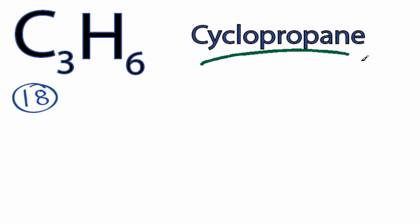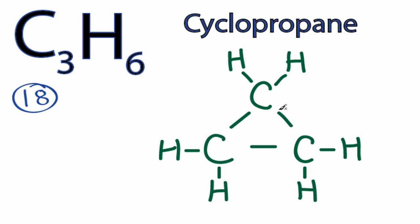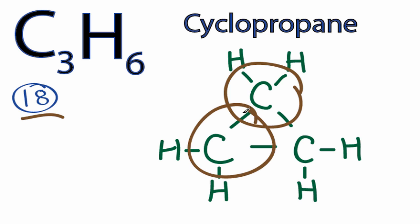The first structure is called cyclopropane. When we see cyclo, we're thinking ring. So here you can see we've used 18 valence electrons. Each of the carbons has four things bonded to it, has four single bonds. So each bond has two valence electrons, so the carbons all have octets.